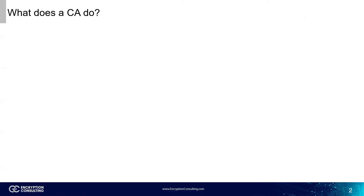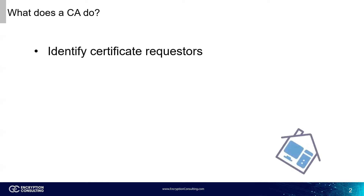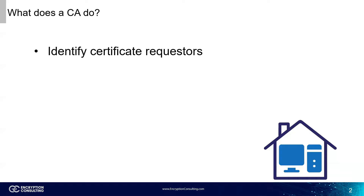Now, your first question about certificate authorities is probably, what does a CA do? One of the many important jobs of a certificate authority is to identify certificate requesters. This is done through the issuance of a certificate that matches the identity of the requester with their public key.